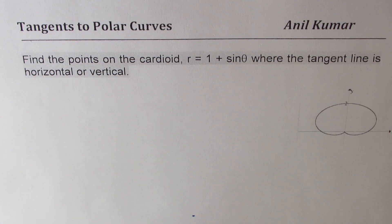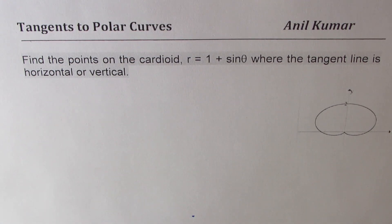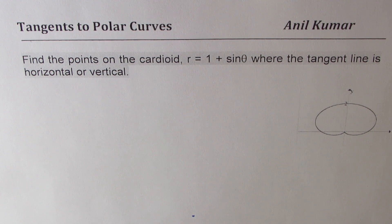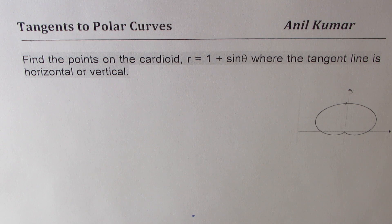I'm Anil Kumar. Let me thank all the viewers and subscribers for watching my videos, posting questions and asking some great questions. Here is a request from one of our subscribers who wants to know about tangents to polar curves. The equation is: find the points on the cardioid r equals 1 plus sine theta where the tangent line is horizontal or vertical. That's a very interesting question.